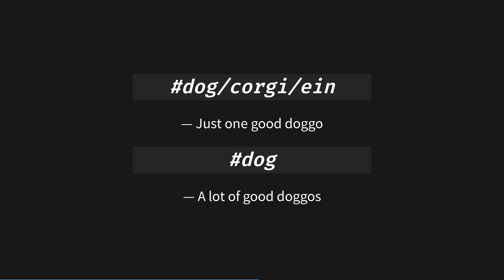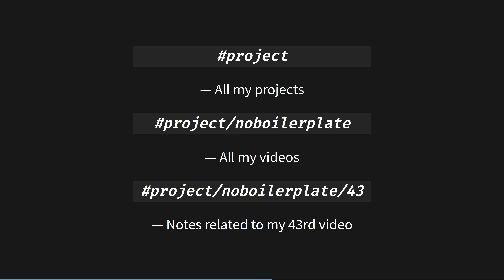In this example, searching for the whole dog/corgi/ein tag only gets notes tagged with this one dog, but searching for the dog tag gets notes for all dogs, no matter what breed or name they have. So in Obsidian, you may build a folder-like hierarchy without the constraints of a file being inside only one folder. This doesn't solve the problem that there's no such thing as a tag note, but it's better than folders.